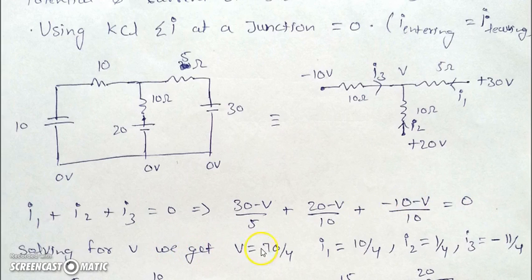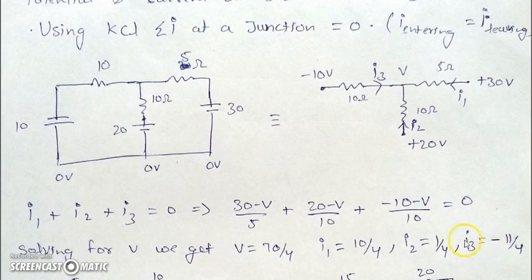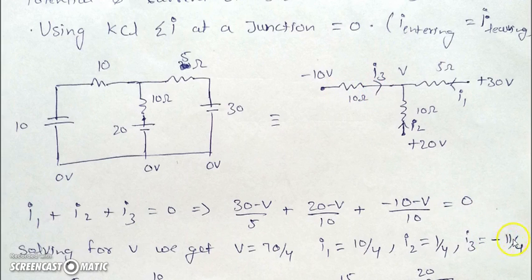We solve for V and get the values of I1, I2, and I3. I3 comes out to be negative. As mentioned in KVL and KCL, whenever an assumed current comes out negative, it means the actual direction of current is opposite to what was assumed in the diagram. So from this 10-ohm resistance, the current is not flowing towards the right — in reality the current flows towards the left, with a magnitude of 11/4. The value doesn't change, only the direction.